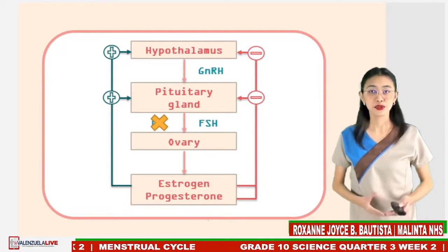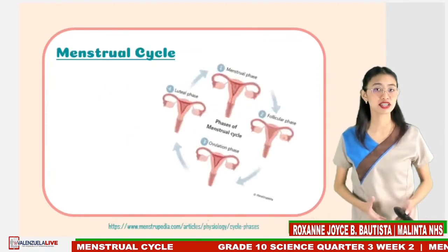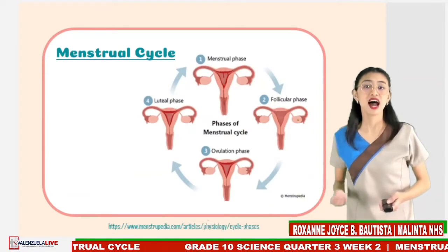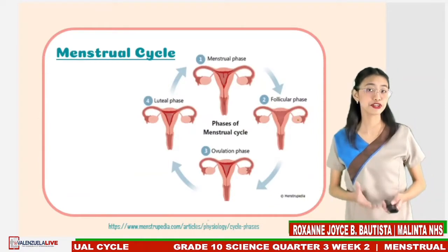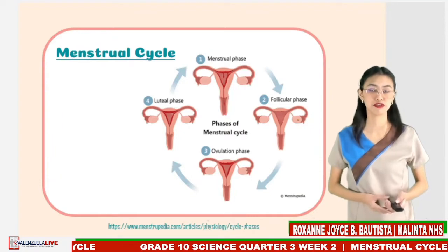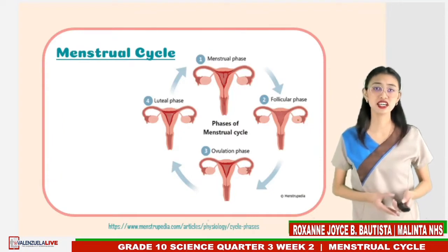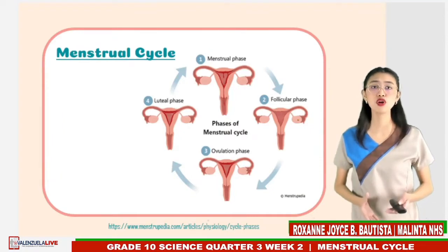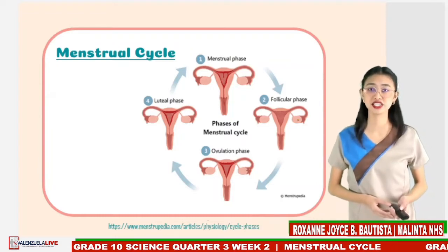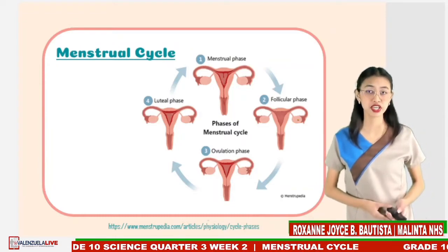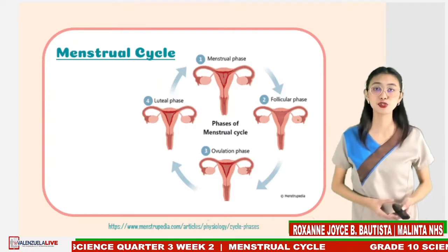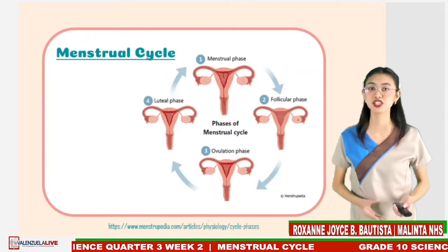Remember that the menstrual cycle includes a menstrual phase, a follicular phase, ovulation, and a luteal phase. Changes in the level of core hormones such as estrogen, luteinizing hormone, follicle-stimulating hormone, and progesterone occur during the menstrual cycle.